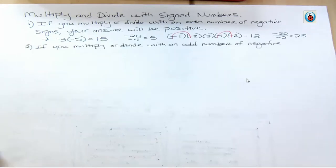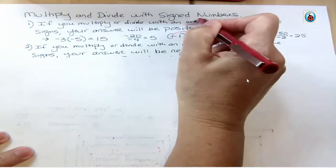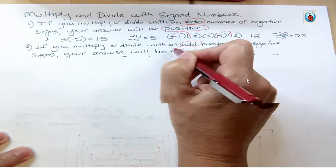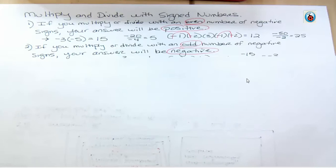So the second rule, you may be able to guess that then. If you multiply or divide with an odd number of negative signs, your answer will be negative. So even is positive and odd is negative. Those are the things that are important to remember about those two rules. So let's look at the examples with an odd number.